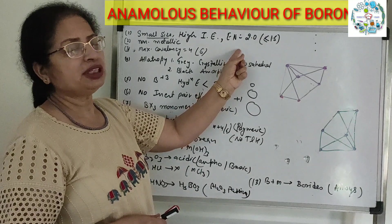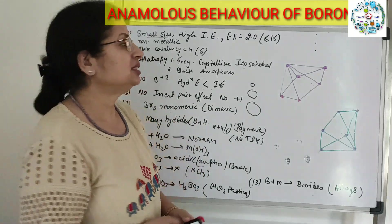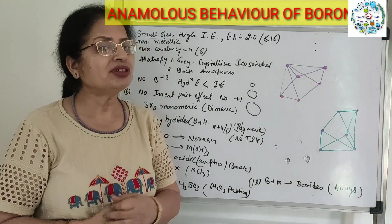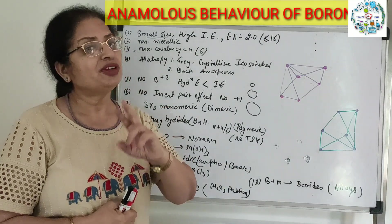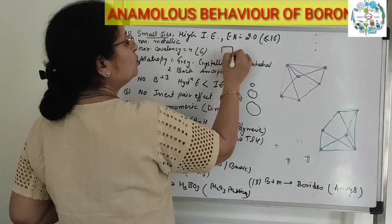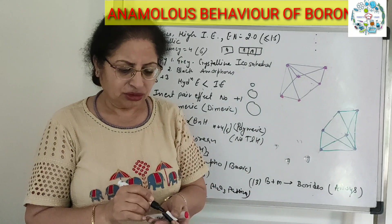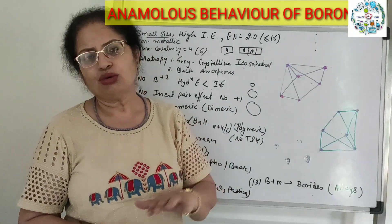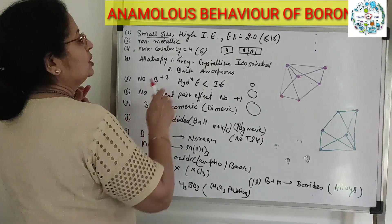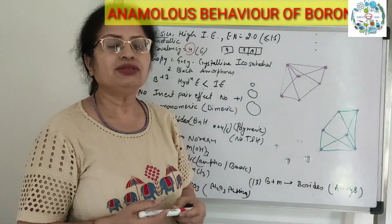Because of its small size, ionization energy is very high and electronegativity is the most in the group. The electronegativity of boron is the highest; the rest of the elements have electronegativity of 1.5 or below. This is how boron behaves as a non-metal, while the rest of the elements in group 13 are metals. The other elements can show expanded valency up to 6 because they have 3d, 4d, and 5d orbitals.